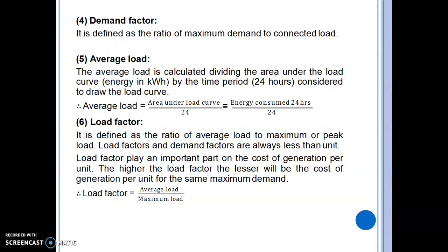The demand factor is defined as the ratio of maximum demand to the connected load. The average load is calculated by dividing the area under the load curve by the time period considered. The area under the load curve represents the energy consumed in 24 hours for a daily load curve. Dividing this energy by the time duration gives the average load.